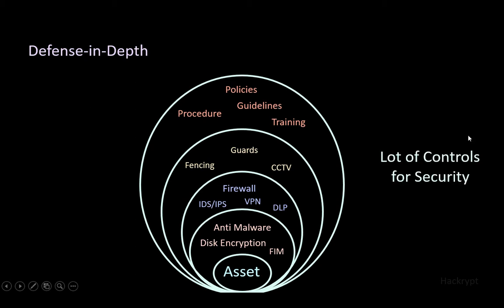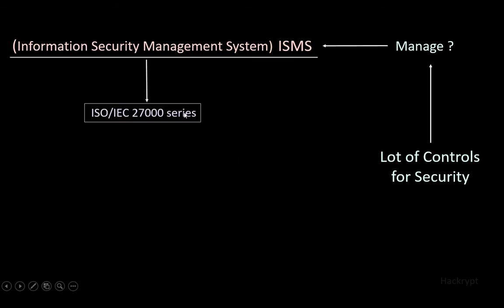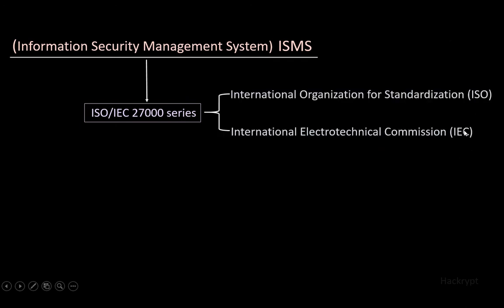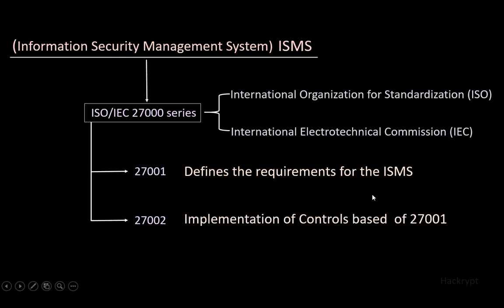So far we have seen a lot of controls for security. To manage these we need an information security management system, ISMS. We can implement our own ISMS or follow international standards like the ISO 27000 series, proposed by ISO and IEC. There are two well-known standards: ISO 27001, which provides the requirements for the ISMS, and ISO 27002, which gives the procedures to implement controls based on those requirements.